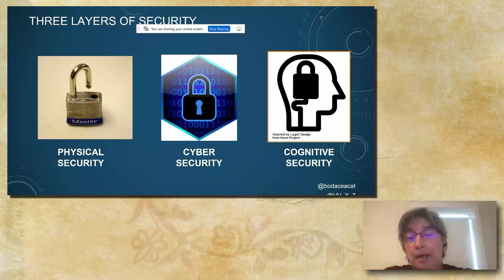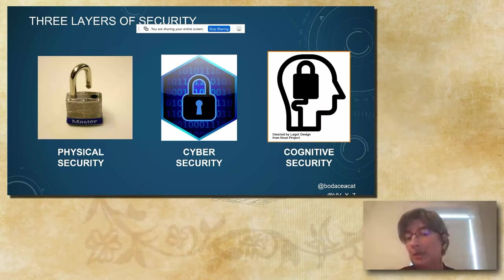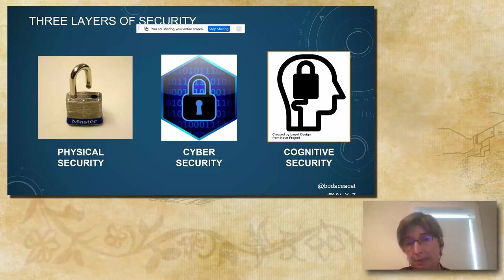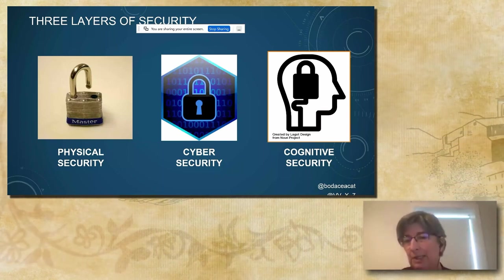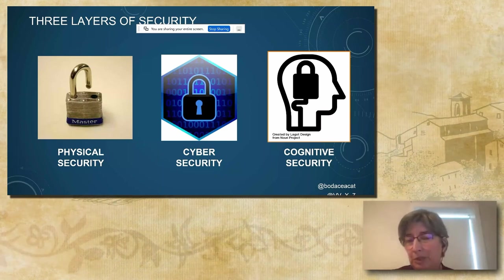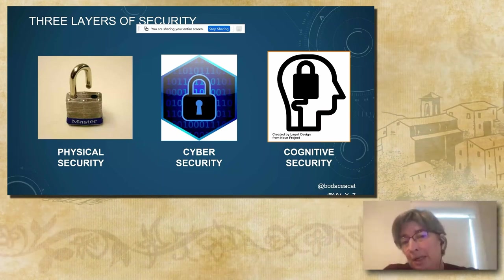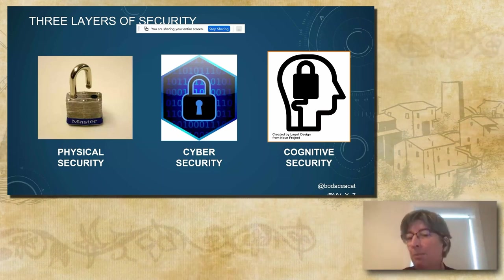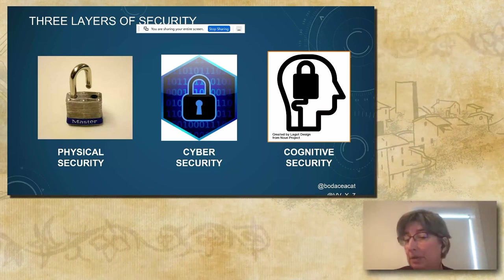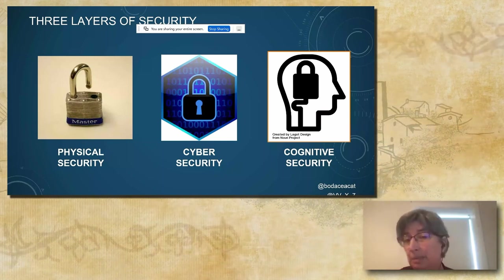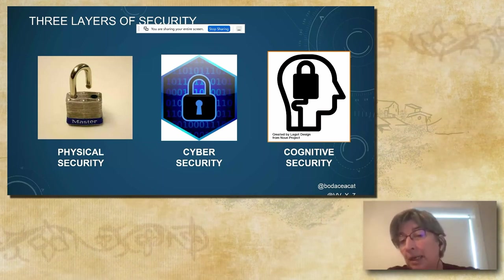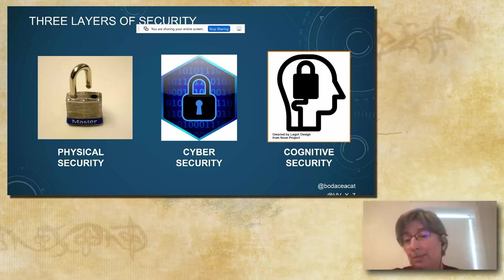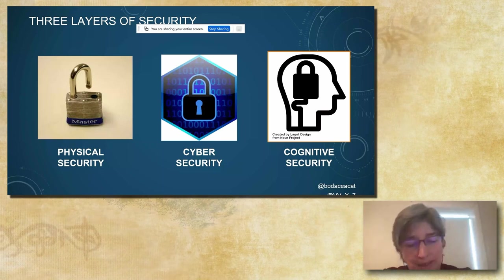We framed this as there being three layers of security. You have physical security — breaking into staffing, sealing the box — cyber security, the networks and endpoints of machines. But this third part is cognitive security. The endpoints are human brains. It's our beliefs, our emotions, our senses of belonging, our senses of community. And the networks between those are communities, ranging from small community up to country levels.